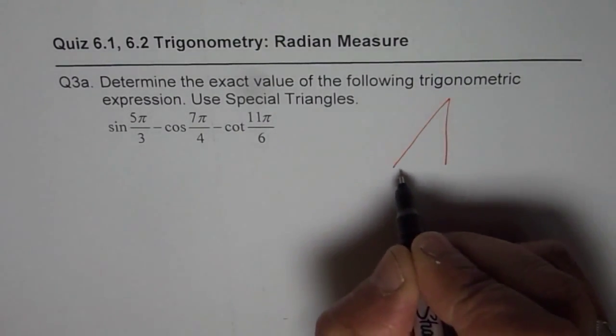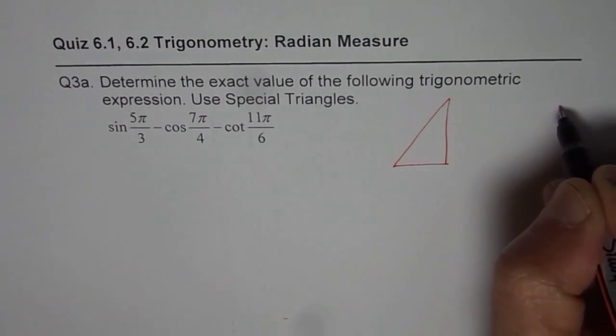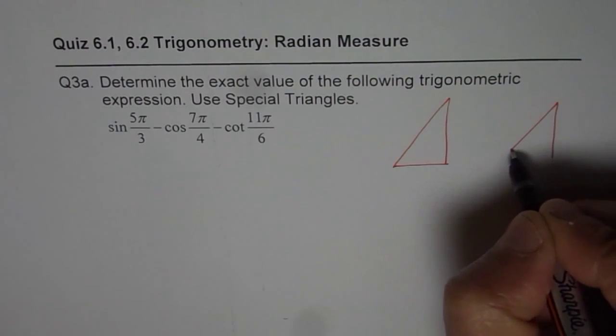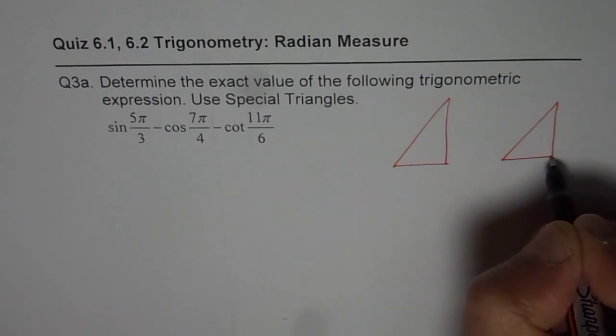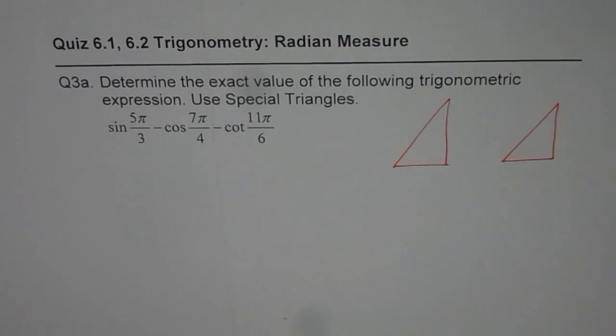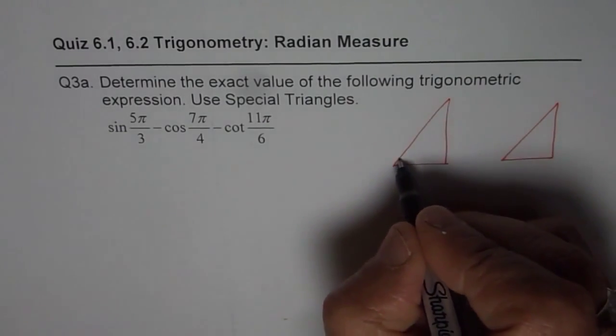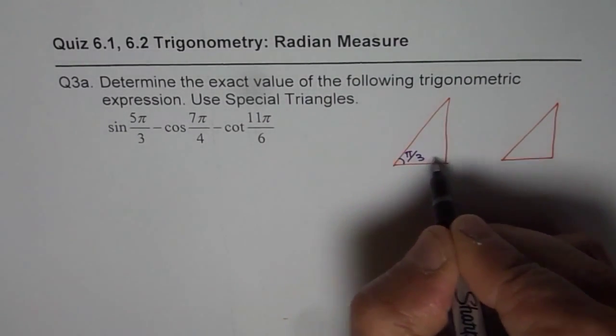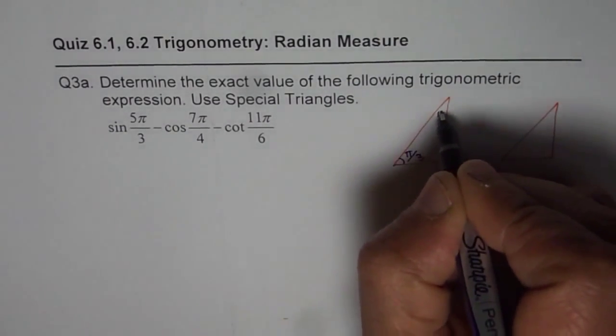So, we have this triangle as the π/3, π/6 triangle and this one is the π/4 triangle. So, let me write down the values. This angle is π/3, this is π/2, that is π/6.